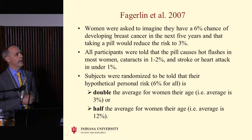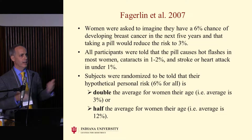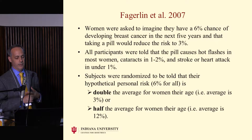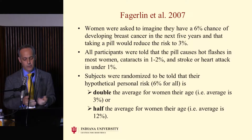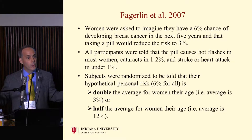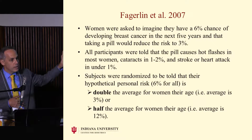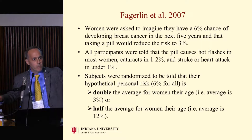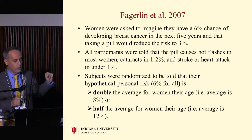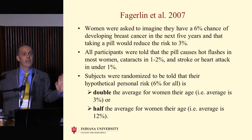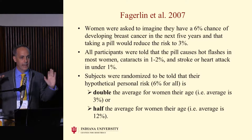Women at a hospital cafeteria were asked to imagine they have a 6% chance of developing breast cancer in the next five years, and that taking a pill would reduce that to 3% — modeled on tamoxifen. They were also all told the pill causes hot flashes in most women, cataracts in 1% to 2%, and stroke or heart attack in under 1%. They were then randomized: half were told their 6% personal risk is double the average, so the average is 3%. The other half were told their 6% risk is below average — it's half the average of 12%.